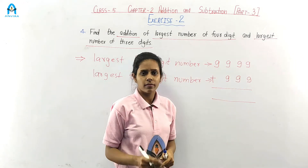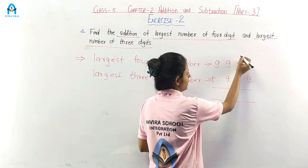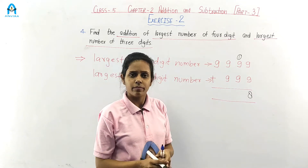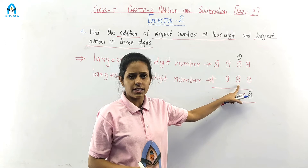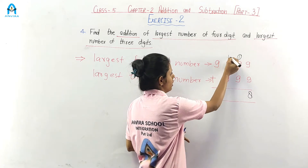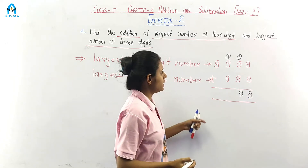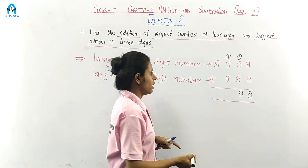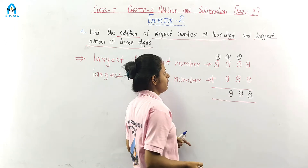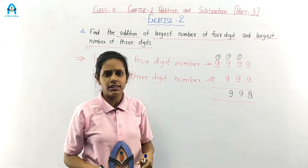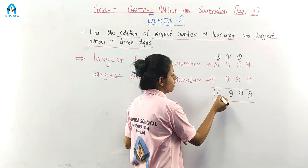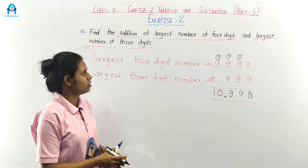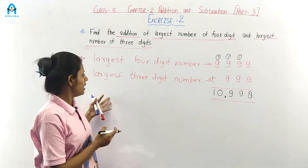9 plus 9 is 18, write 8 carry 1. 1 plus 9 is 10, plus 9 is 19, write 9 carry 1. 1 plus 9 is 10, plus 9 is 19, write 9 carry 1. 1 plus 9 is 10. So the answer is 10,998. That is the addition of the largest 4-digit number and the largest 3-digit number.